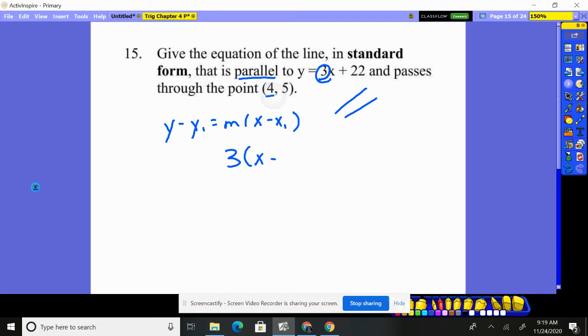What's my x value? 4. That's my x₁. My y₁ is 5. That's easy. Y minus 5, distribute through to get 3x minus 12.